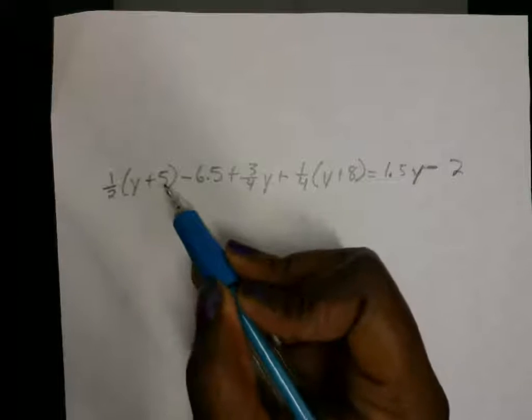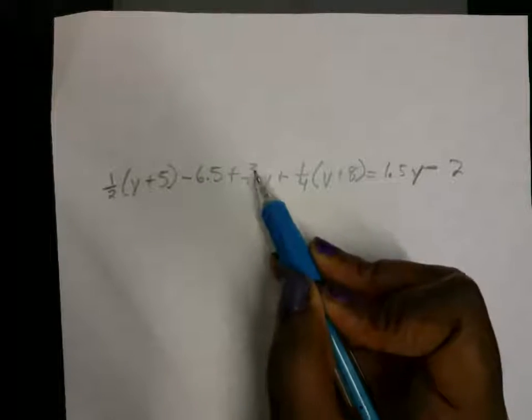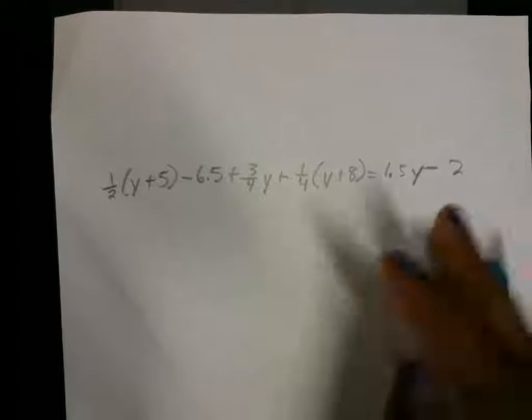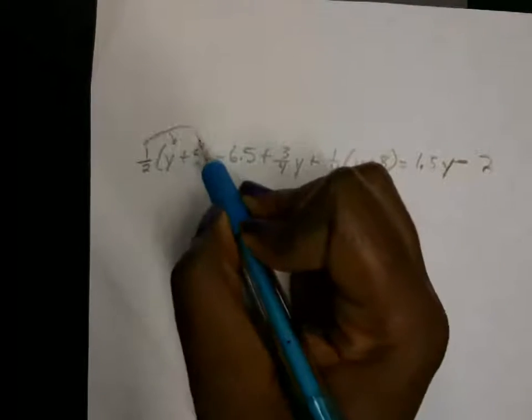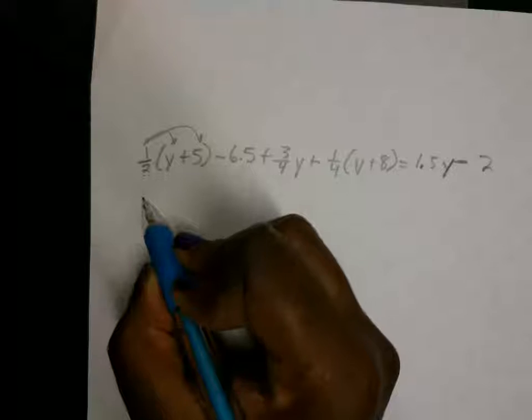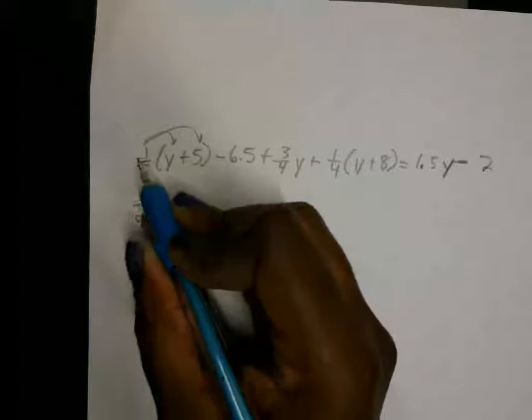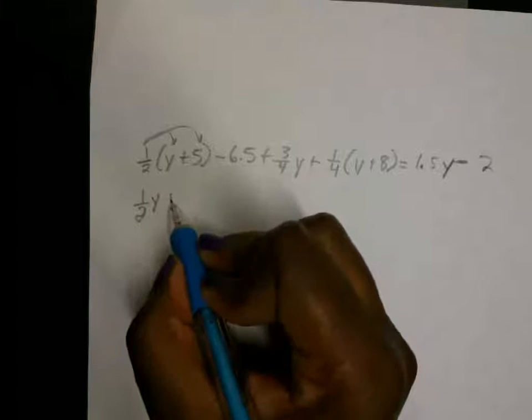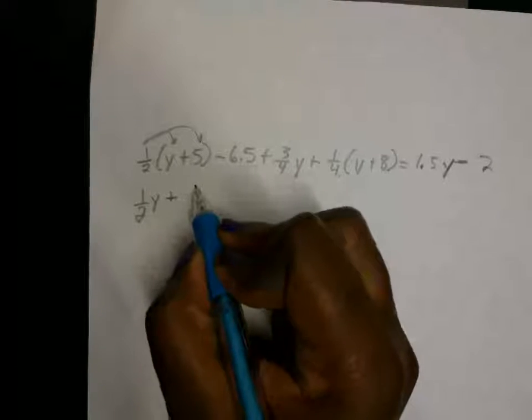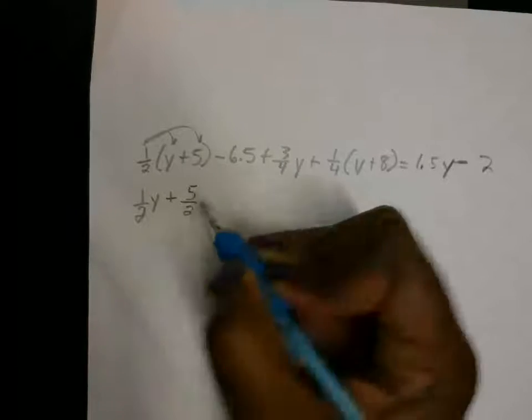So first step is distributive property. We are going to distribute. So here, I'm going to write this as one-half times y, which is one-half y, one-half times 5, which is five-halves. I'm going to leave it as a fraction for now.